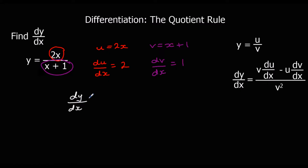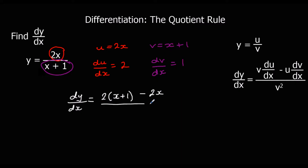So dy/dx is v times du/dx, so 2 times x plus 1, minus u times dv/dx, which is 2x, over v squared, so x plus 1 squared.